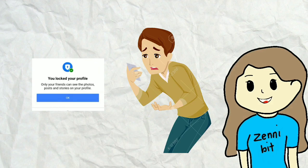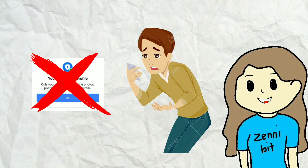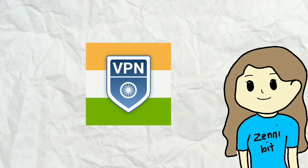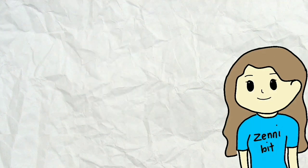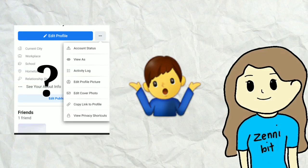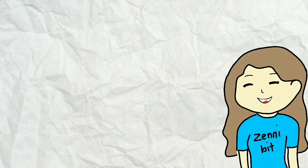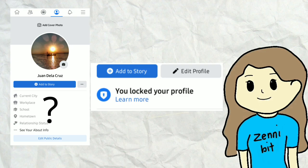In case you are unable to lock your Facebook profile through changing the language to Burmese, downloading the old version, or using VPN India, the following is another option. If you don't see a locked profile option in your Facebook profile settings right now, that means the feature is not available in your country. Fortunately, you may still manually lock your Facebook profile by changing some Facebook settings. The only difference is that your profile will not have a locked badge.